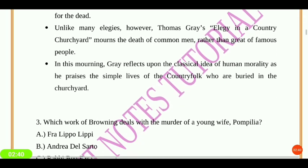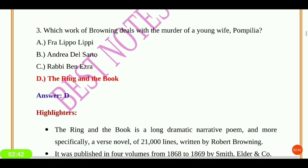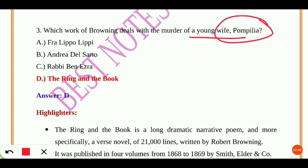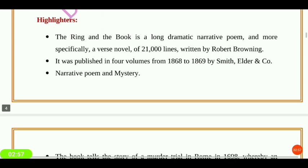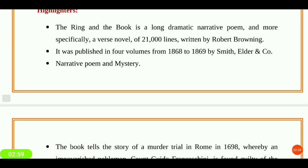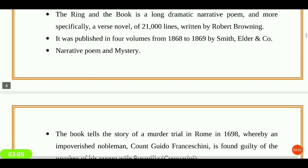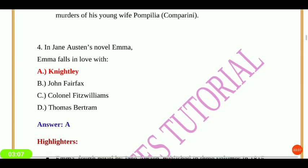Now the third question: which work of Browning deals with the murder of the young wife Pompilia? The answer is 'The Ring and the Book.' This poem has 21,000 lines and was written by Robert Browning. It was published in four volumes between 1868 and 1869.